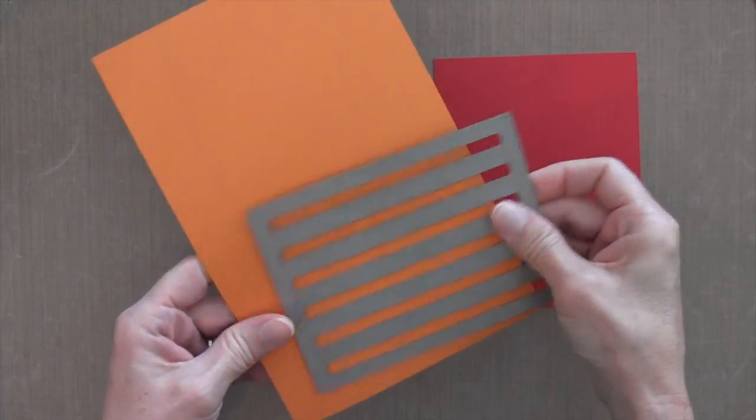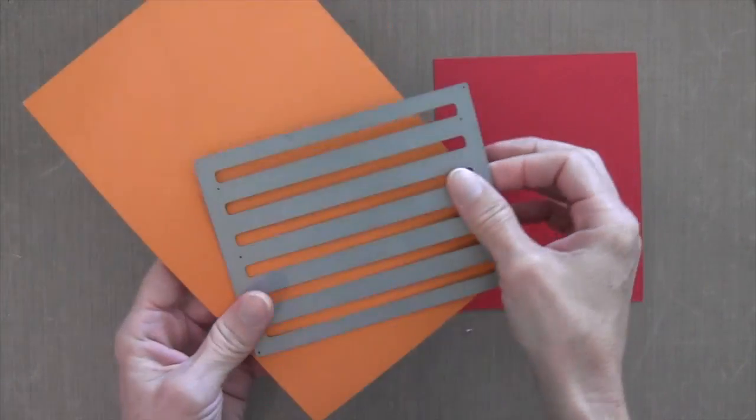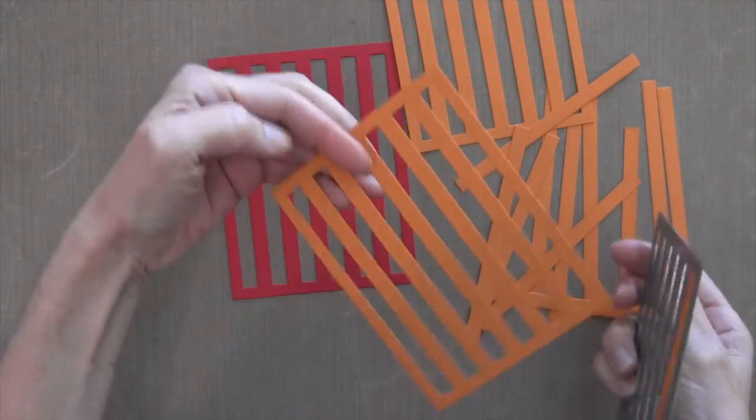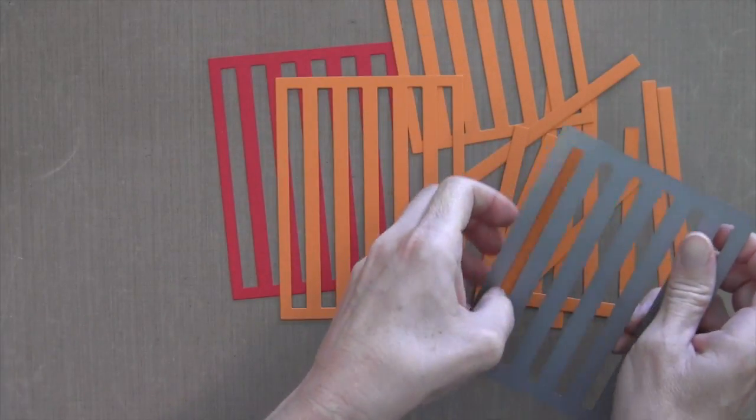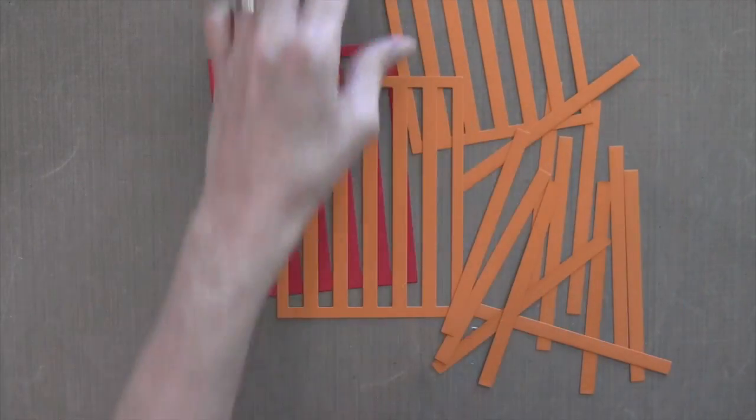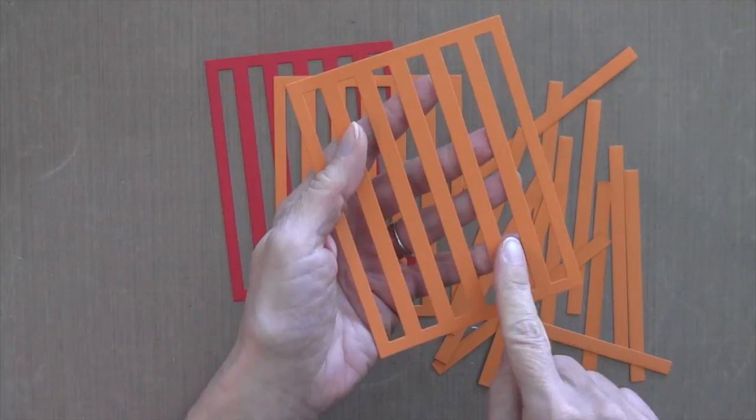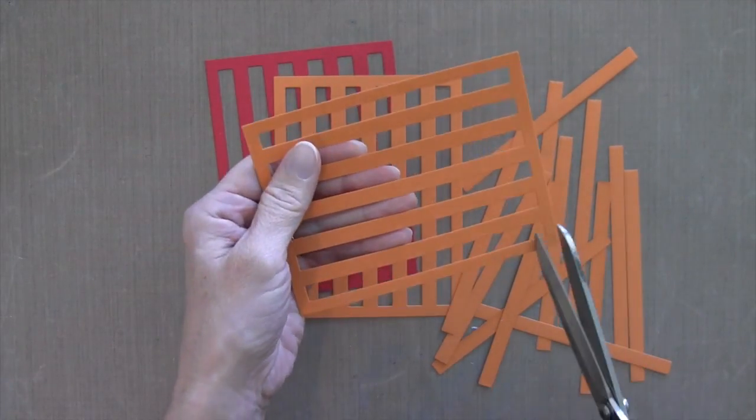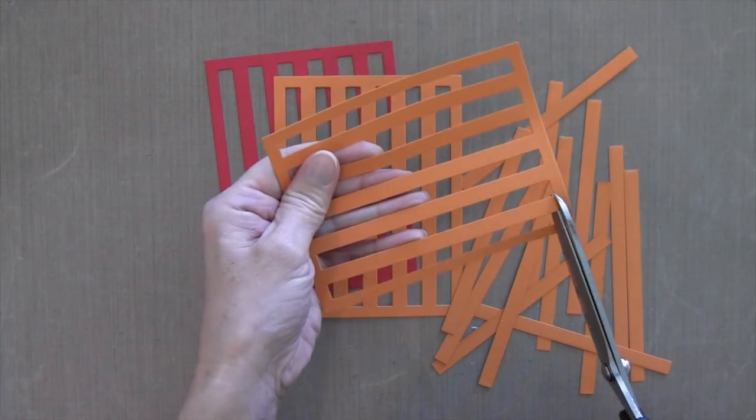So I'm going to take some pumpkin pie cardstock by Stampin' Up. I'm going to die cut this twice with the pumpkin pie and then also some real red I'm going to cut it once. And I'm going to use all these inserts to actually do the weave. Now you can't use the very outside but you can use the inside ones for additional pieces that you'll need to weave through.